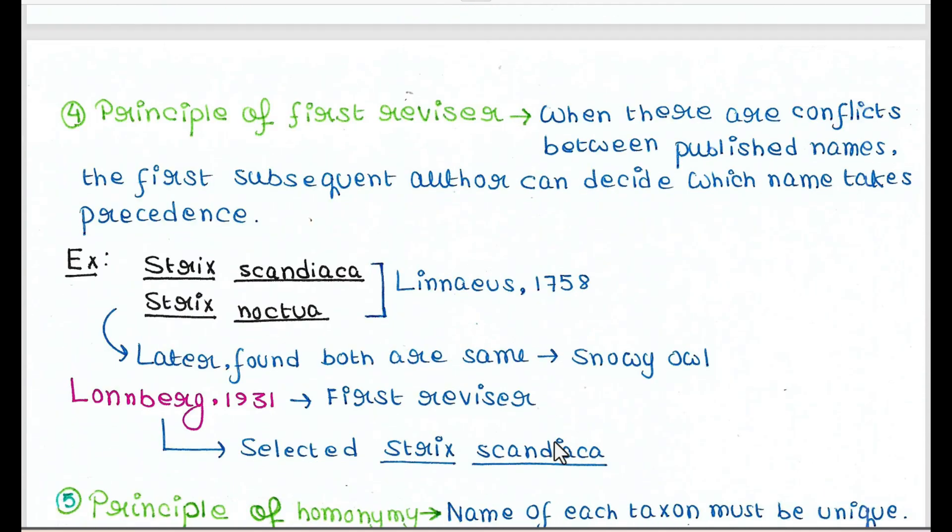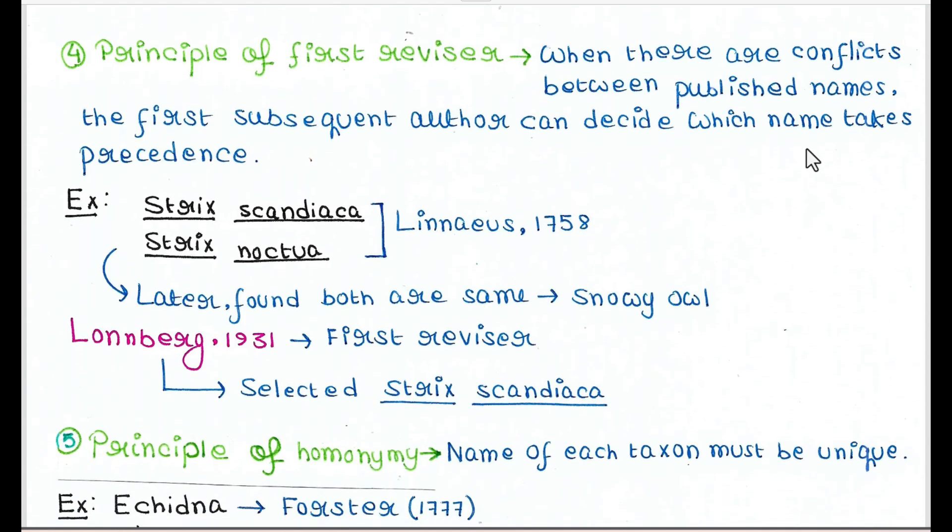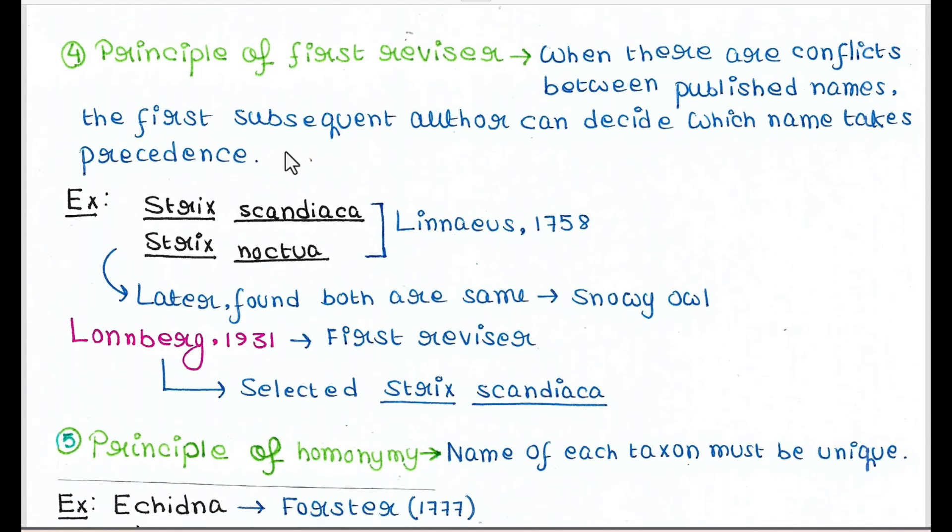Next is principle of first revisor. So when there are conflicts between published names, the first subsequent author can decide which name takes precedence. For example, in 1758, Linnaeus found two owl species and named them Strix scandiaca and Strix noctua. Later, it was found that both of them were same. They were snowy owls. So in 1931, Lonnberg, who was the first revisor, kept the name Strix scandiaca. So it's his choice.